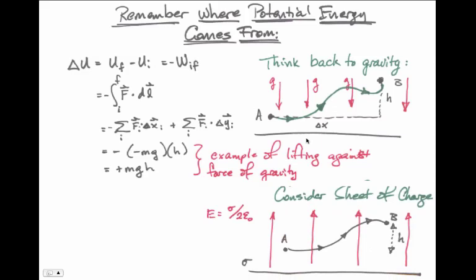We can construct a very similar example in electrostatics. Imagine we have a sheet of charge along the bottom. The electric field is given by E equals sigma over 2 epsilon naught, where sigma represents the density of charge along the sheet. The electric field always points vertical — either toward the sheet of charge or away from the sheet of charge, depending on the sign of sigma.